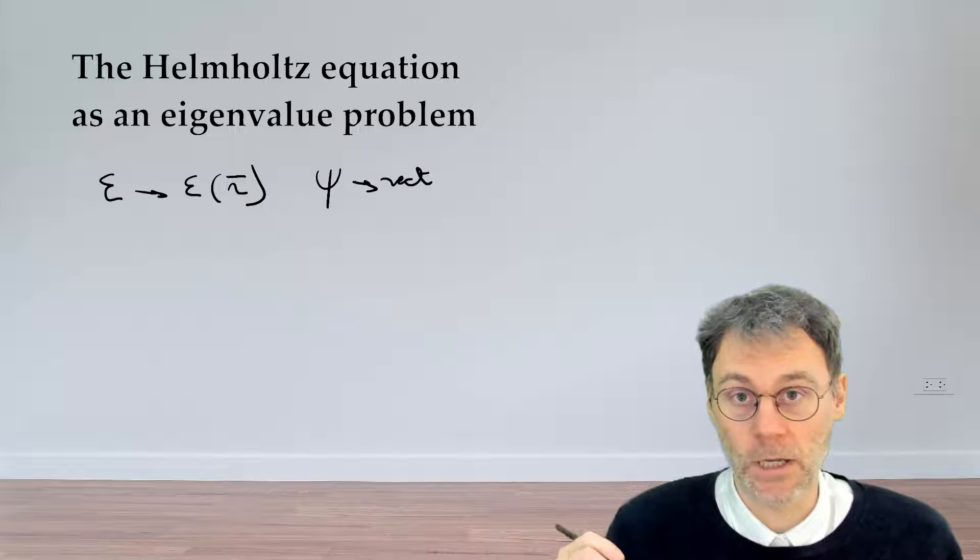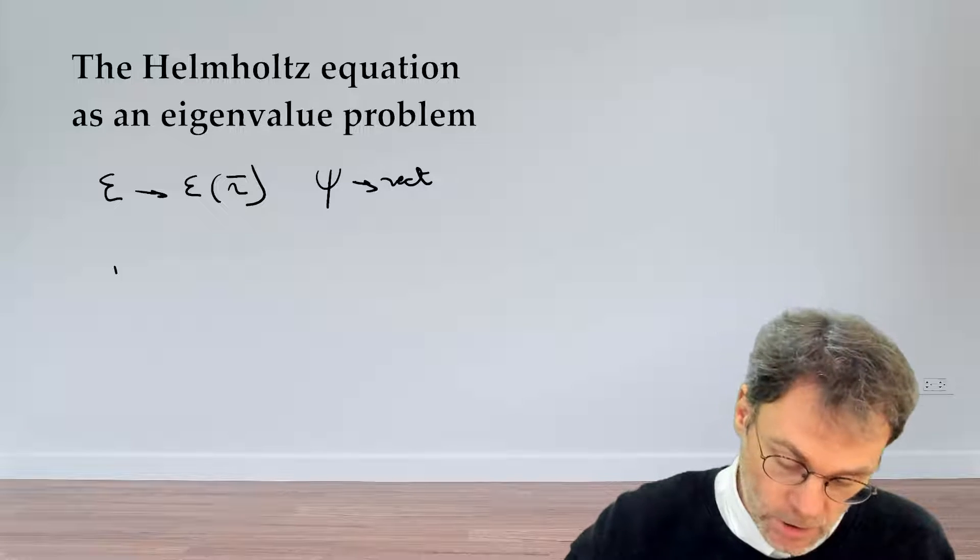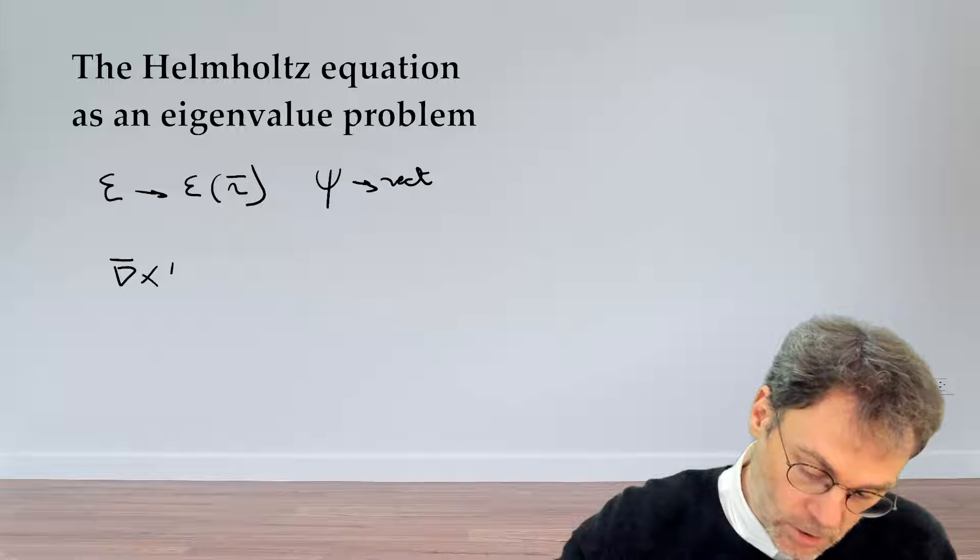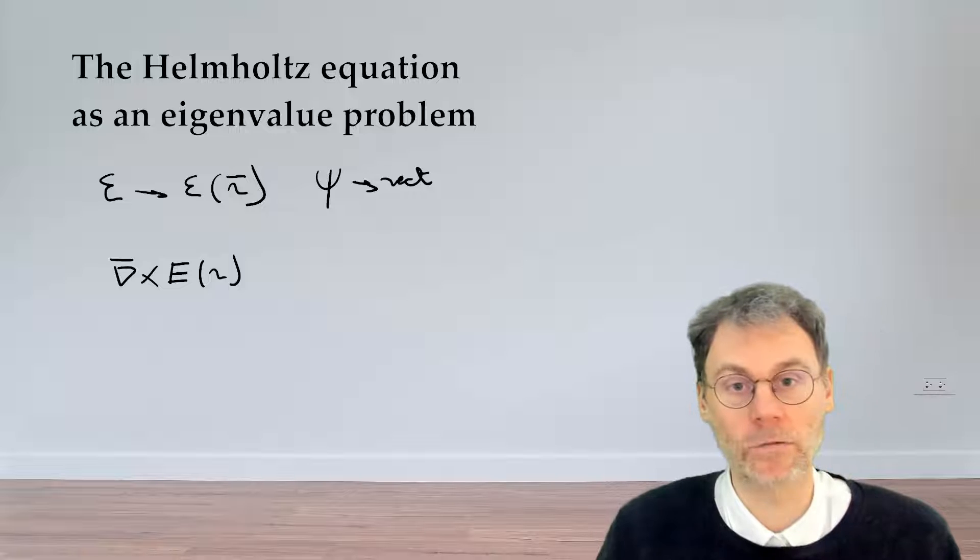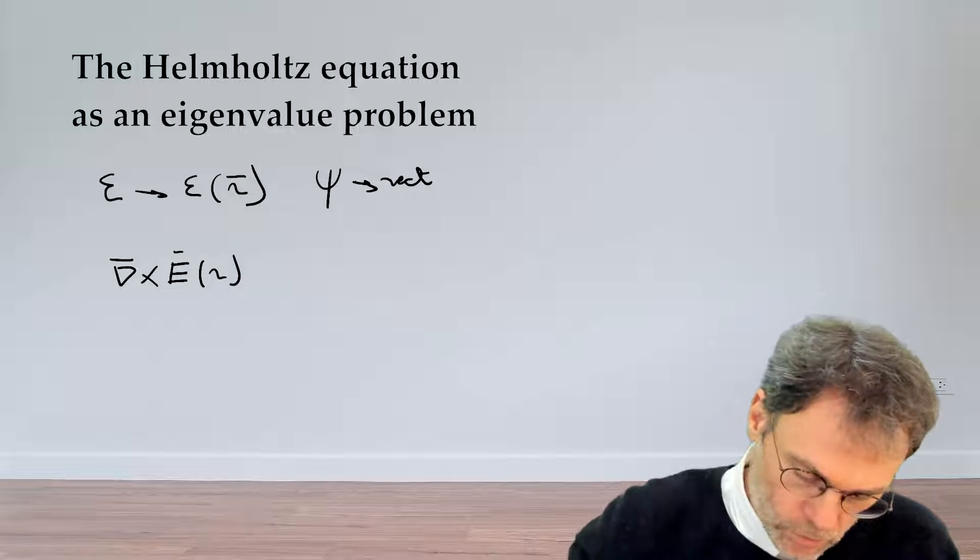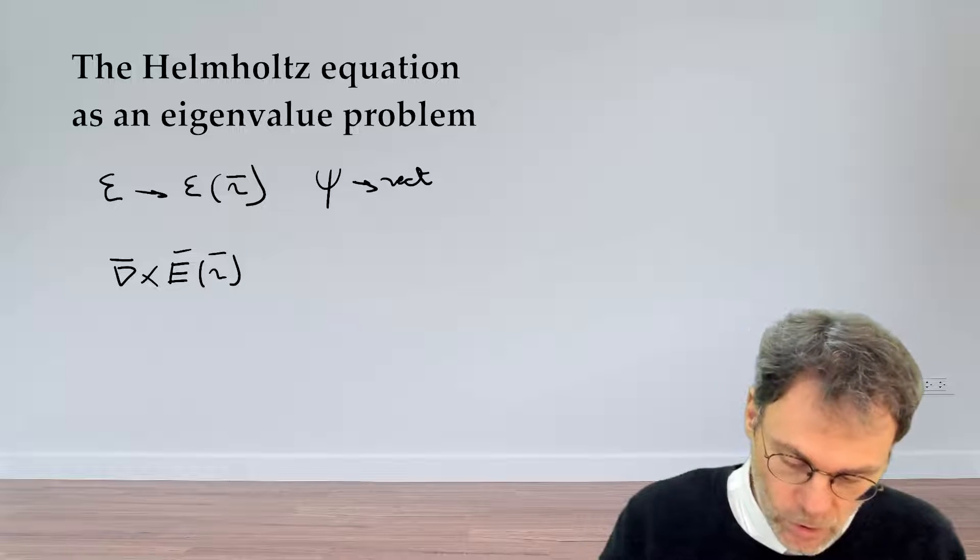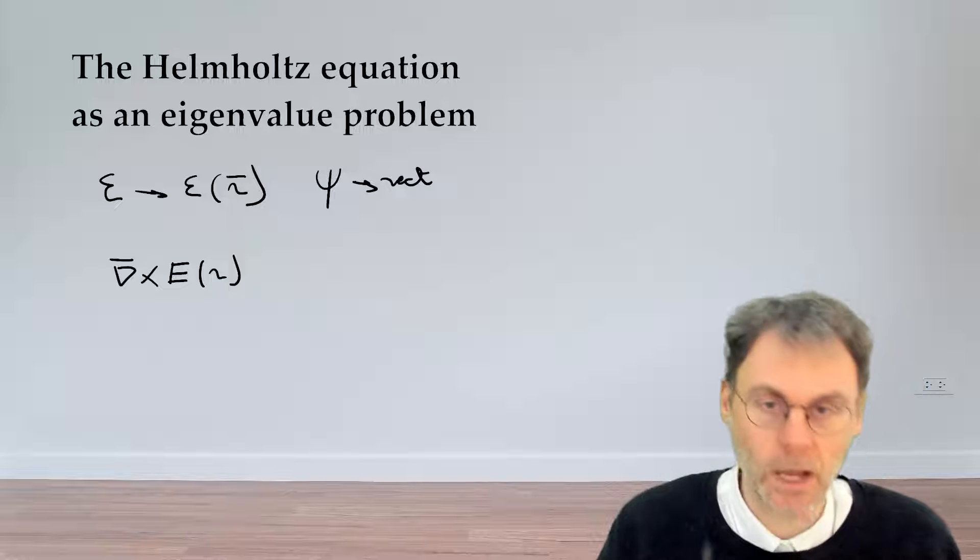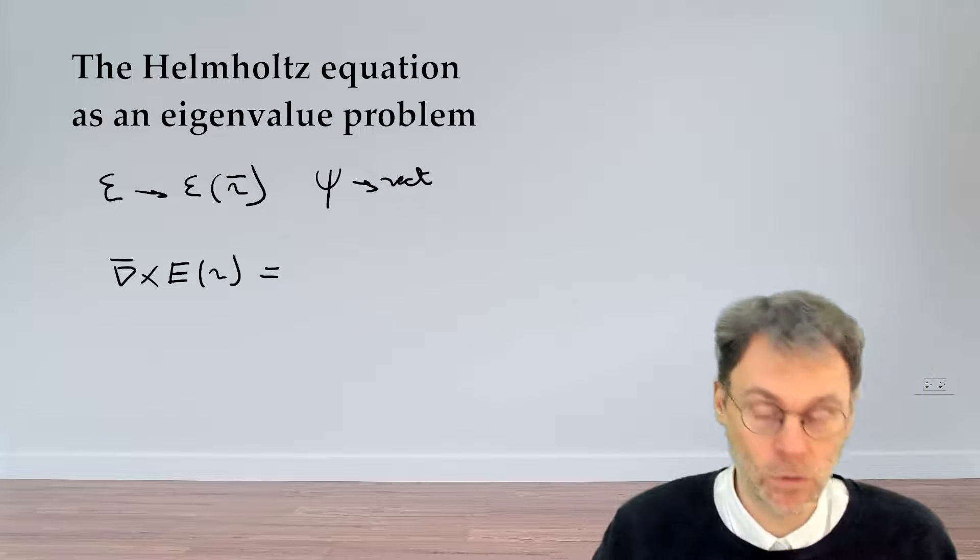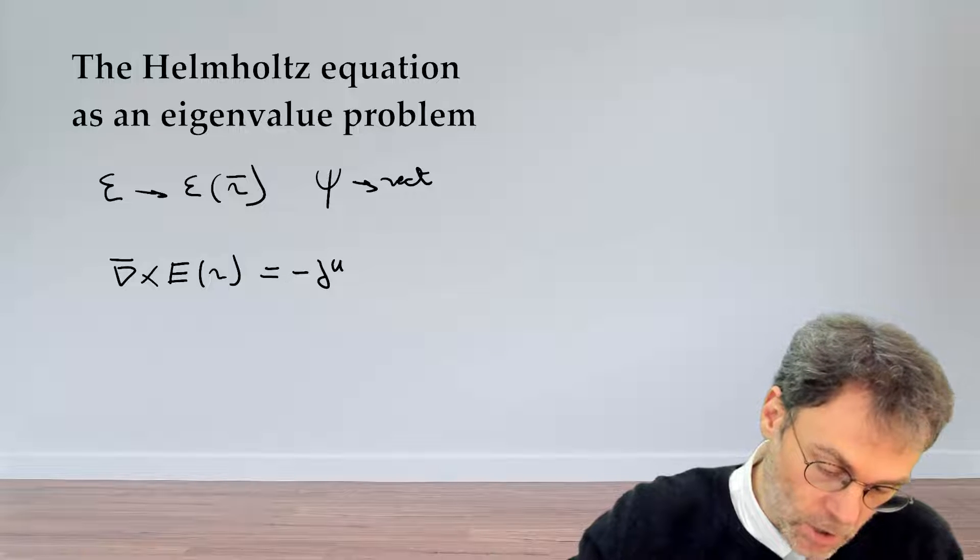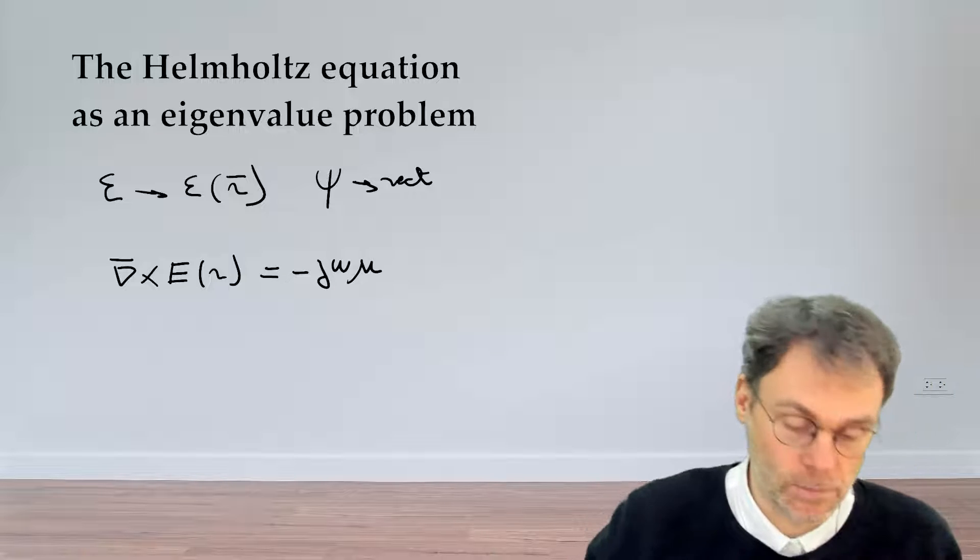Starting point is obviously Maxwell's equations. So Maxwell's equation is that the curl of the electric field, which can vary as a function of the position - I'm going to omit these vectorial signs here just to make my life a little bit easier - so the curl of the electric field is equal to minus j omega mu, the magnetic field.